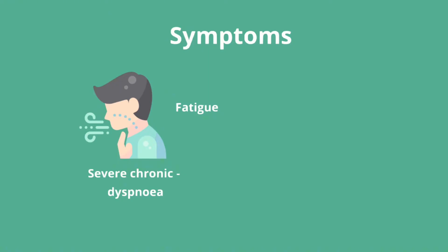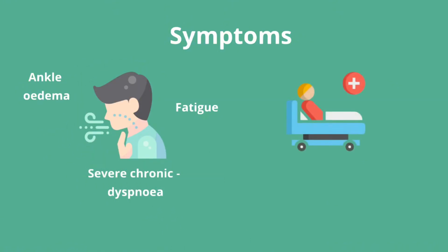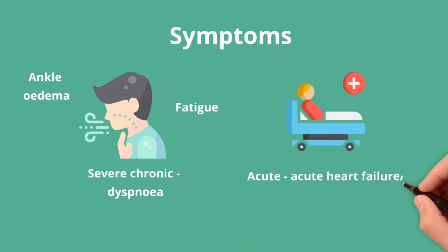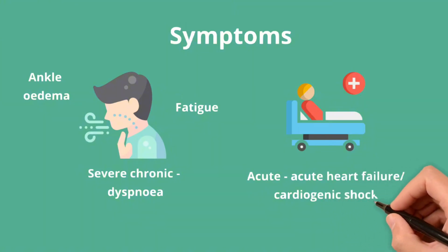As the disease progresses, there can be features of right heart failure, such as peripheral fluid overload and weight gain. Acute mitral regurgitation is rarer and typically due to either rupture of a papillary muscle from a myocardial infarction or leaflet destruction from endocarditis. Patients are usually acutely unwell with signs of heart failure or cardiogenic shock.